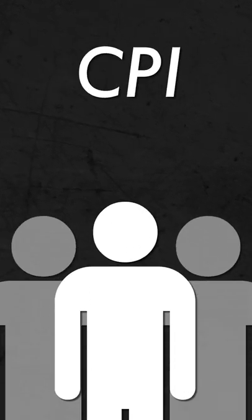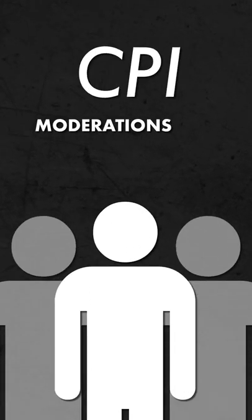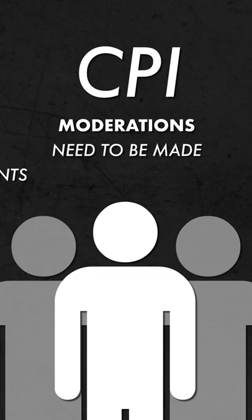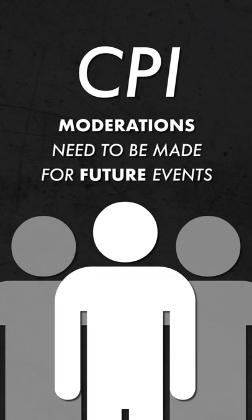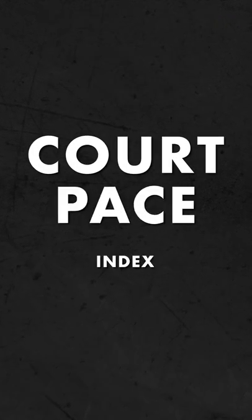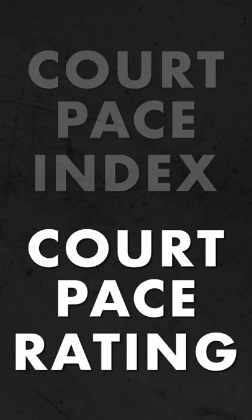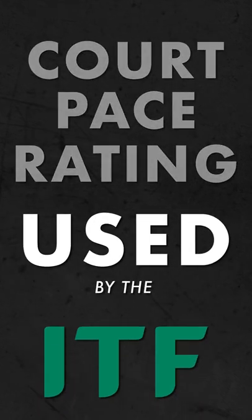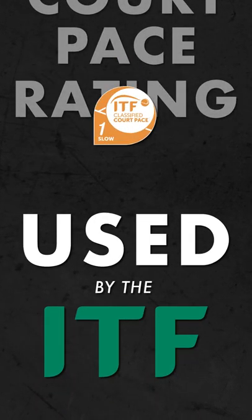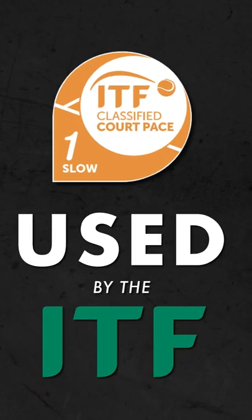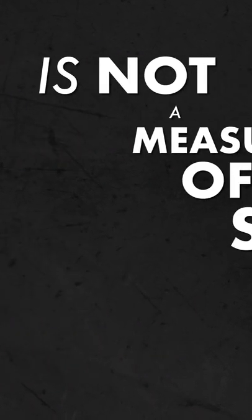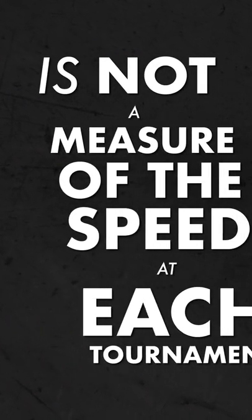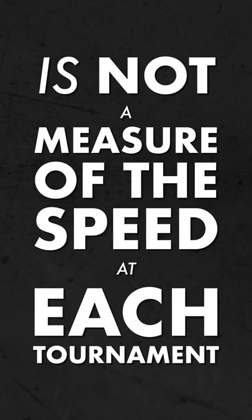It's important for organizers to record CPI, in case modifications need to be made for future events. Court Pace Index is different from a court pace rating, which is primarily used by the ITF to categorize surfaces, and is not a measure of the speed at each tournament.